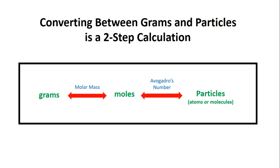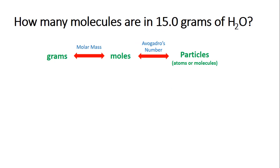For example, grams to particles, we do molar mass and then Avogadro's number. And if we go particles to grams, then we do Avogadro's number and then molar mass. In other words, two conversion factors. So let's get going and show you two calculations that involve a two-step calculation.